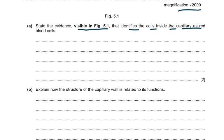The next question asks: explain how the structure of the capillary wall is related to its function. The capillary wall is one cell thick, 1 to 2 micrometers in thickness, made of endothelium or endothelial cells, providing a short distance for diffusion. There are also endothelial pores, also called fenestrations, or gaps between or within the endothelial cells, allowing passage of small molecules from the plasma into the tissue fluid.